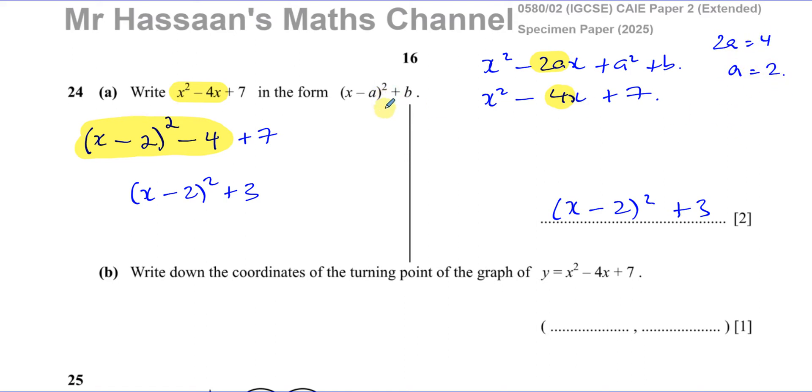If we compare the x terms with each other, we can say that the 2a is the same as the 4. So 2a equals 4, so a is going to be 2. So we can say you have x minus 2 squared. The a squared plus b, the constant term, is the same as 7. I can say that a squared plus b has to be the same as 7. I know a is 2, so that's 2 squared, which is 4 plus b equals 7. So b is 7 minus 4, which is 3. So I can put plus 3. That's an alternative way of writing in this form. In the end, you get the same answer, x minus 2 squared plus 3.